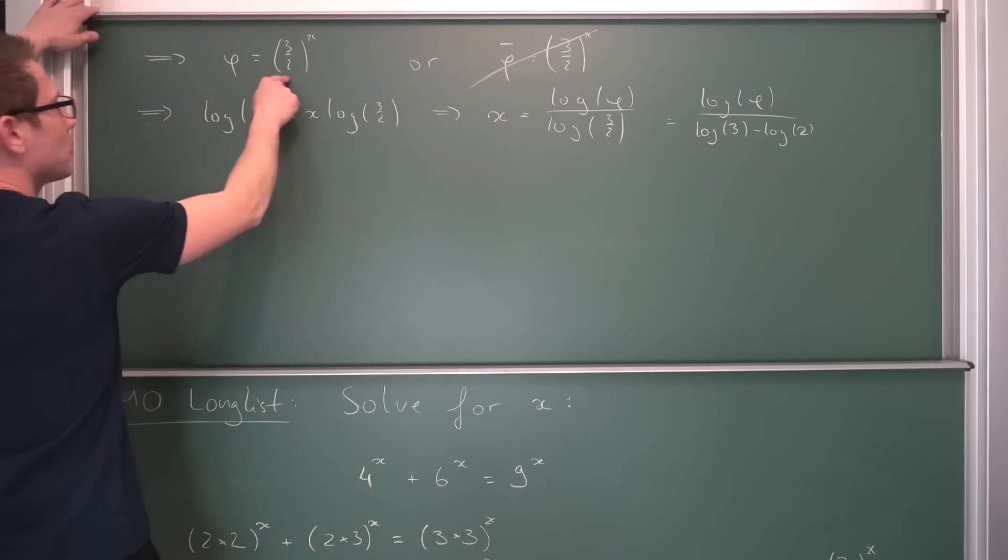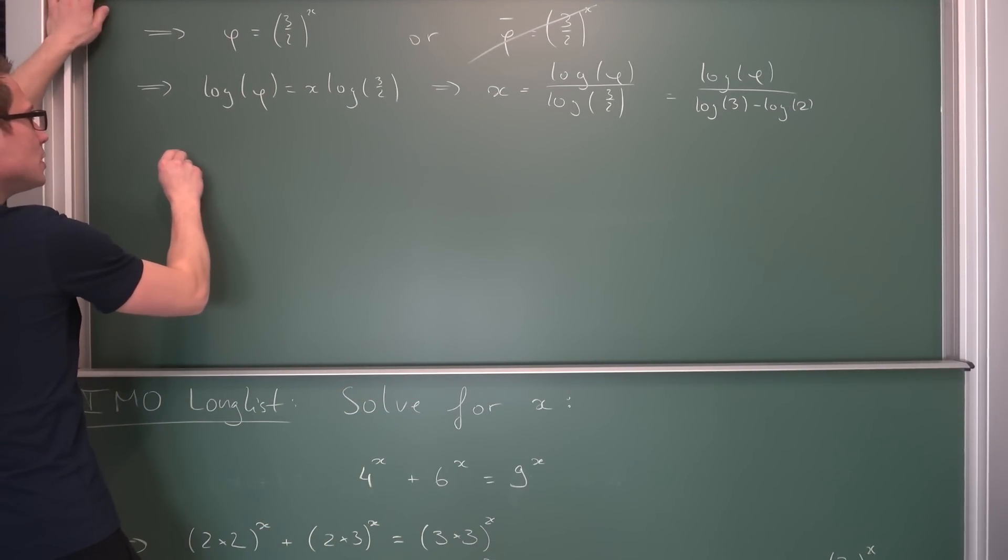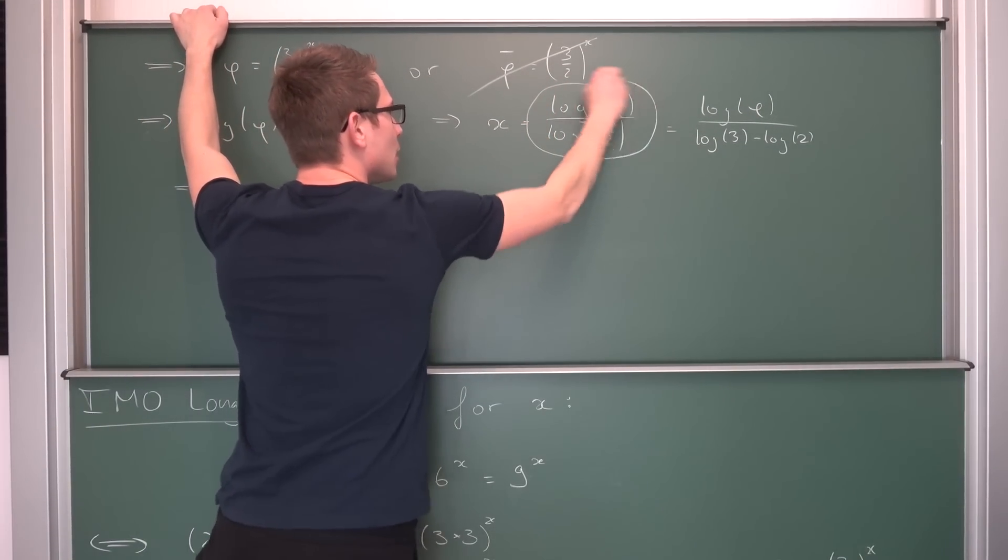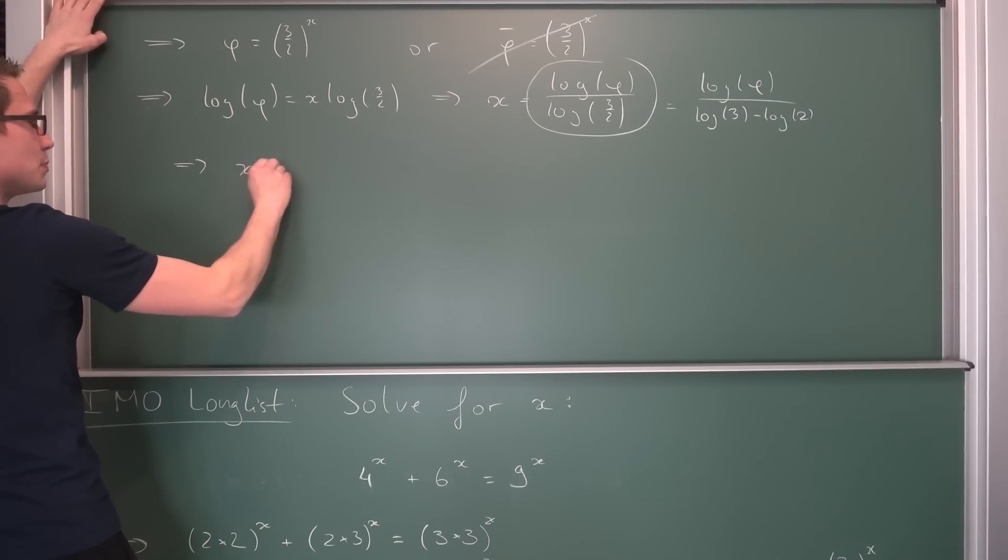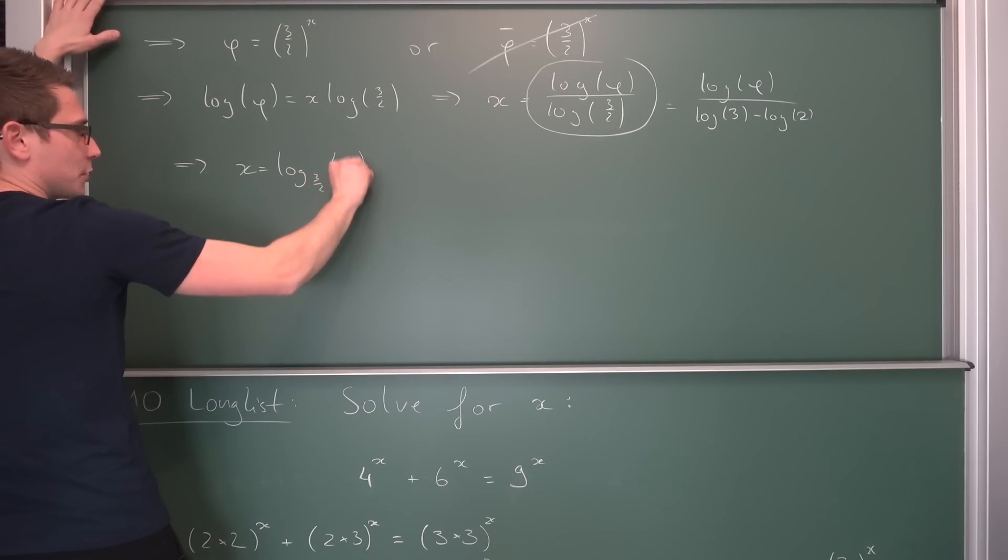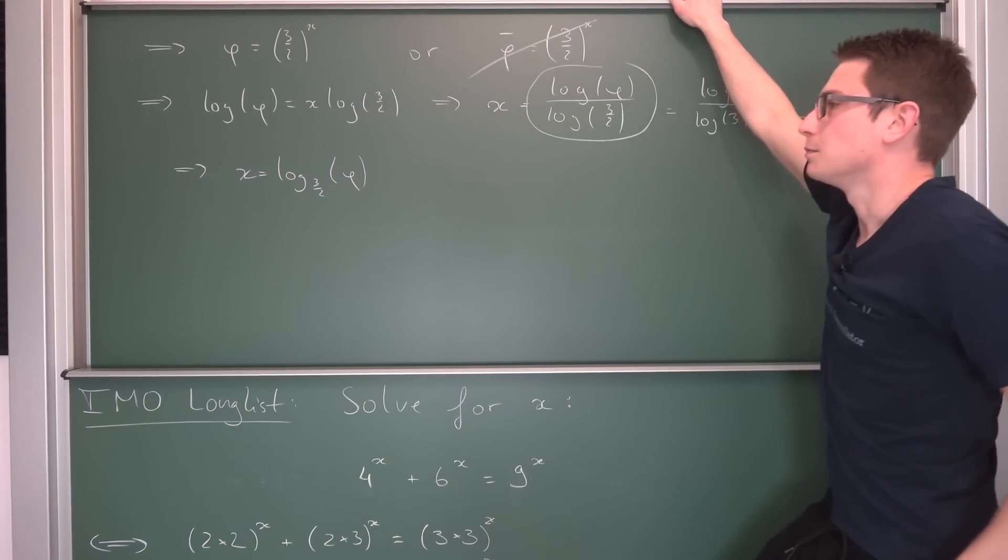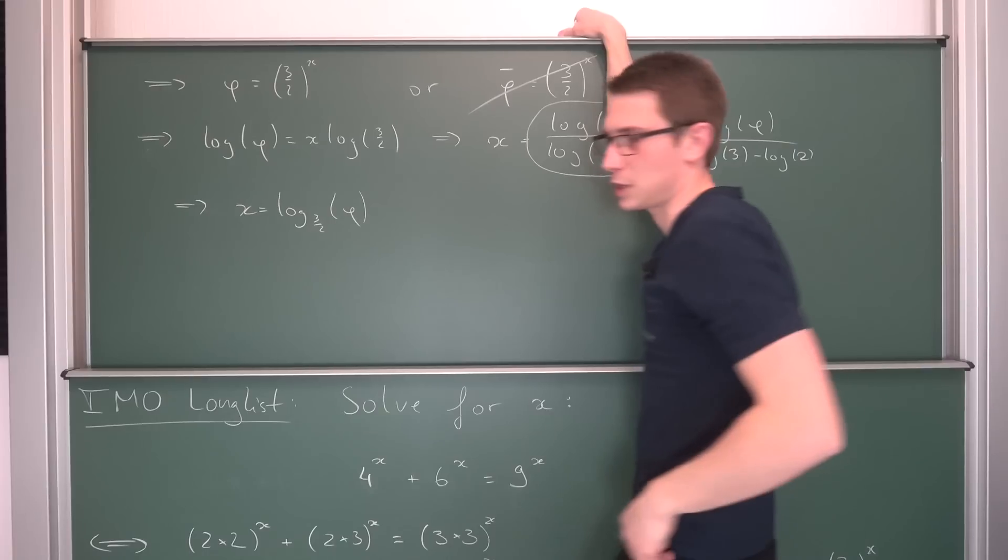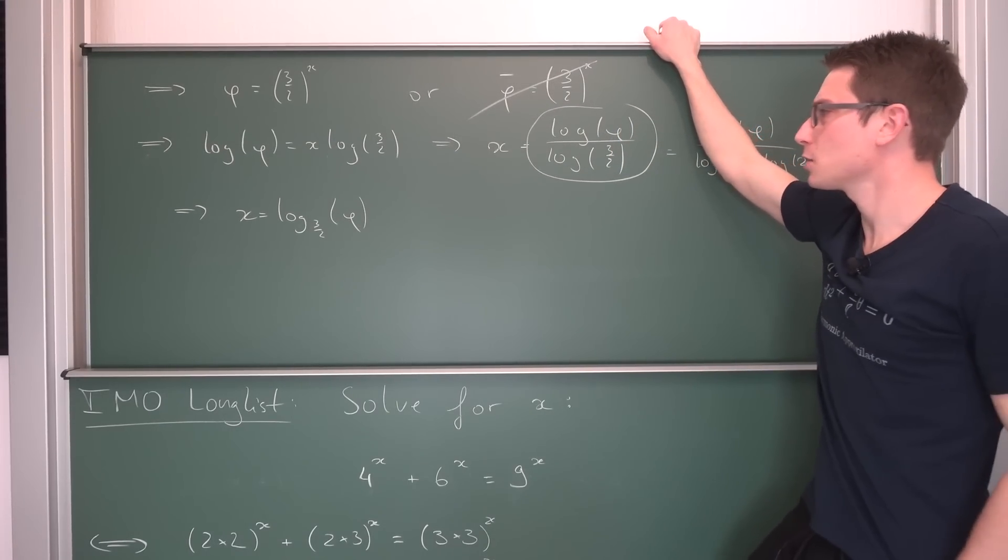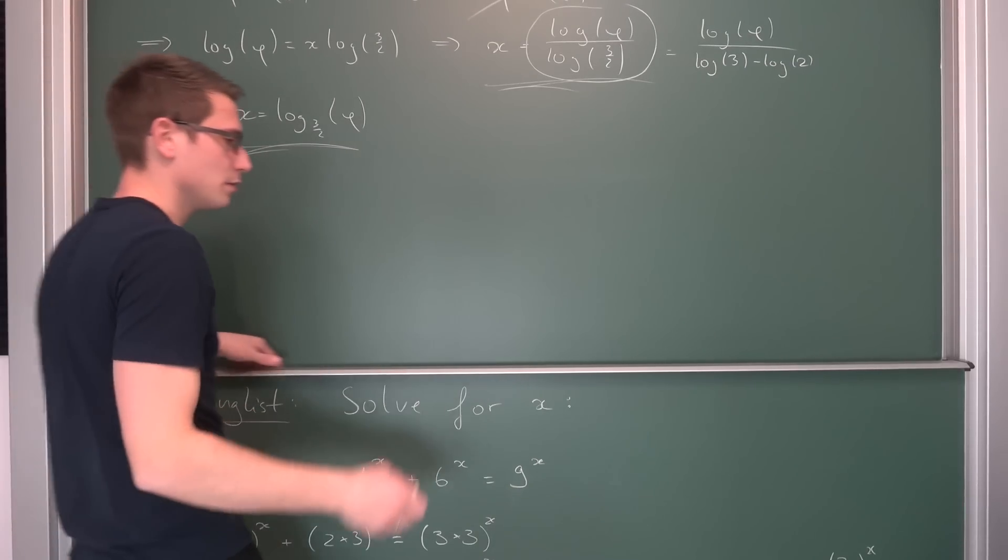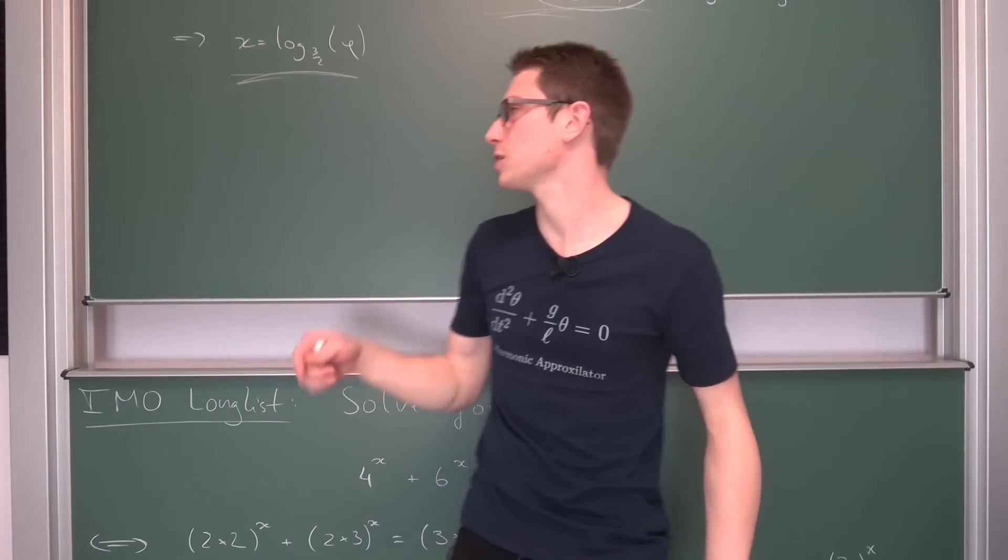As mentioned before, you can also apply the log base 3 over 2 to it. So by using the change of base formula, which is just this right here, we can also rewrite x as being the log of base 3 over 2 of the golden ratio phi. Yeah, because log base 3 over 2 of 3 over 2 is going to cancel out to being just one. Yeah, those are our two solutions. Basically, this one right here or this one. I mean, it doesn't matter. It's just one solution, just in different logarithmic forms represented.